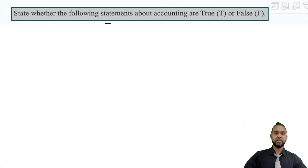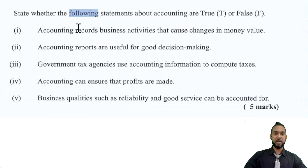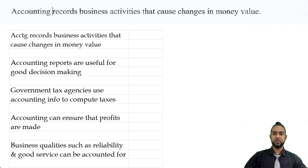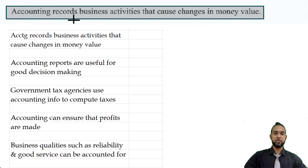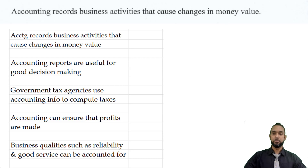Part A says to state whether the following statements about accounting are true or false. So they've given us the items here, and I've also put them across here as well. The first one says accounting records business activities that cause changes in money value. I don't like that phrasing, but that is true, so you're going to see that across here as true.